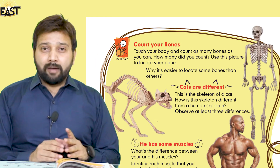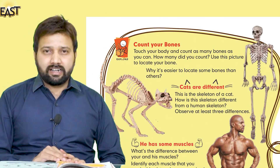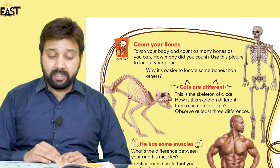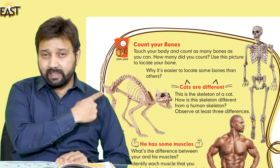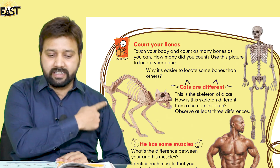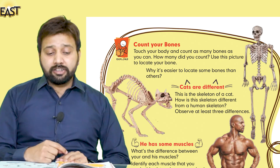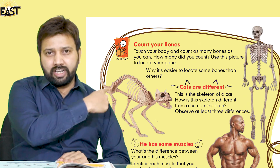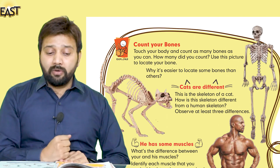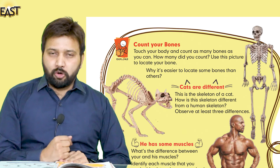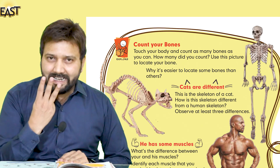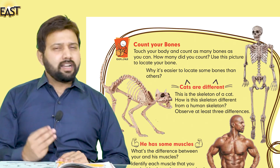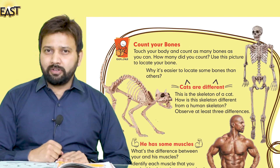اب آپ نے cats تو دیکھی ہوں گی — یہاں پر ایک cat کا skeleton نظر آ رہا ہے اور ساتھ ہی ایک human skeleton ہے. آپ نے ان میں differentiate کرنا ہے — this is the skeleton of a cat، یہ بلی کا ڈھانچہ ہے. So how is this skeleton different from a human skeleton? آپ نے observe کر کے کم از کم تین differences ڈھونڈنے ہیں. چلیں میں آپ کی help کرتا ہوں اور دو differences بتا دیتا ہوں، باقی آپ نے خود ڈھونڈنے ہیں۔